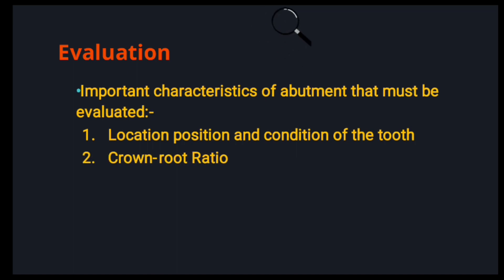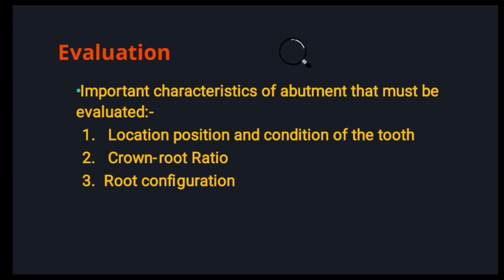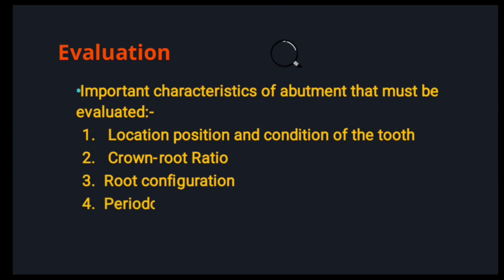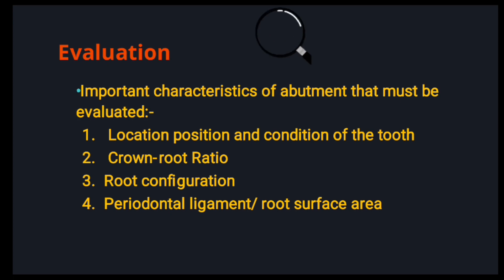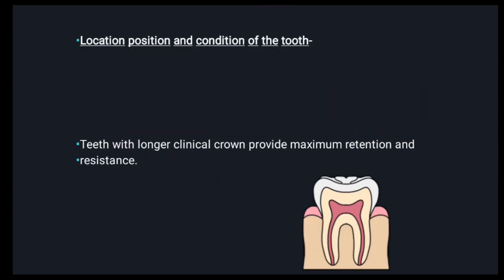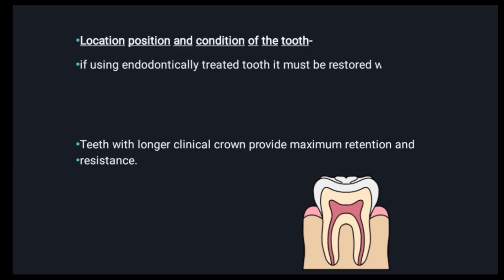Next comes the crown-root ratio. Third is your root configuration — how is the root configuration — and fourth is the periodontal ligament or root surface area, along with the location, position, and condition of the tooth.